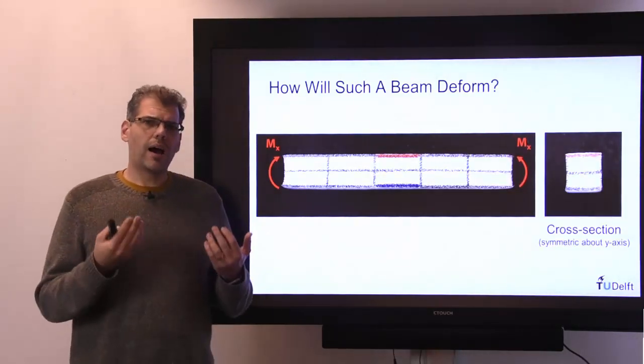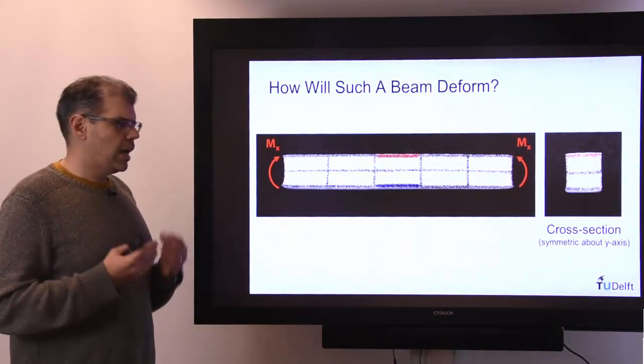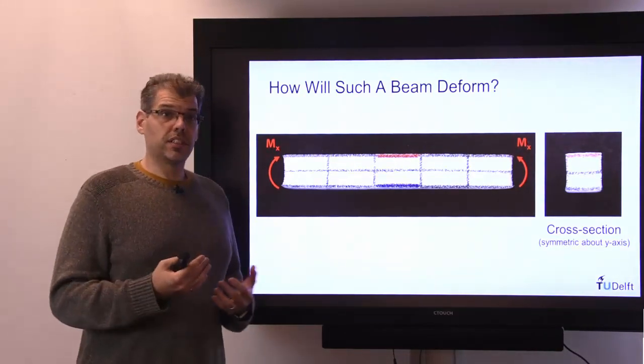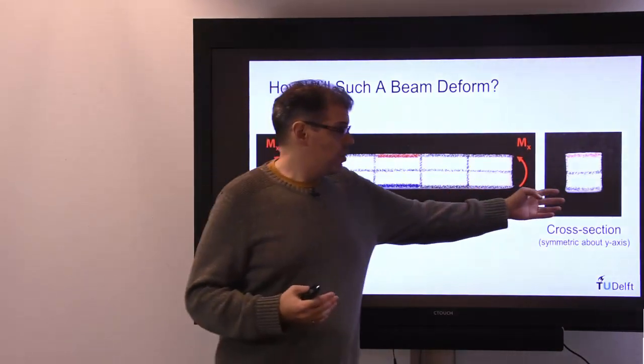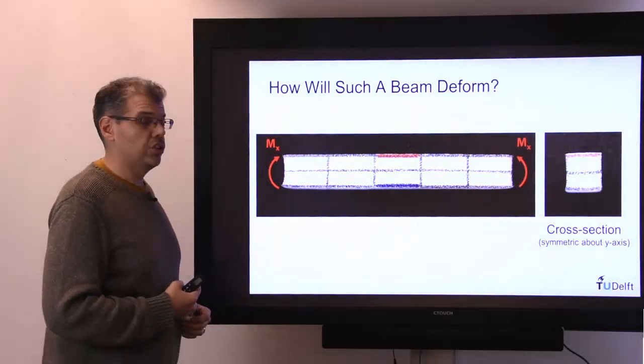What we need to do is think about how such a beam will deform, and we'll do that by looking at the simplest symmetric beam, and that is a beam with a rectangular cross-section as shown here.